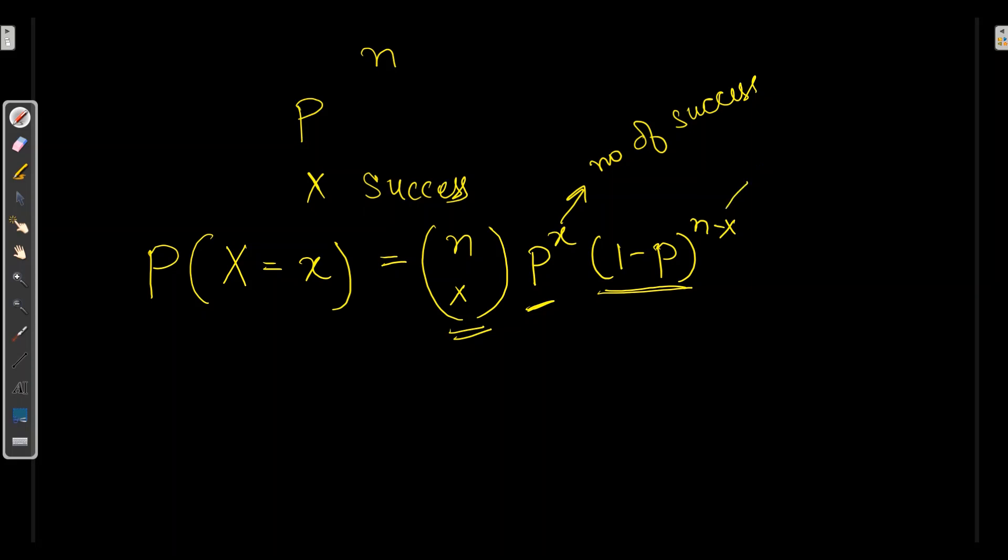So when we run N independent experiments each having Bernoulli distribution with parameter P, and we want to know the probability of X success, we can write probability of X equal to combination NCX times probability of success to the power X and probability of failure to the power N minus X, which refers to number of failures.